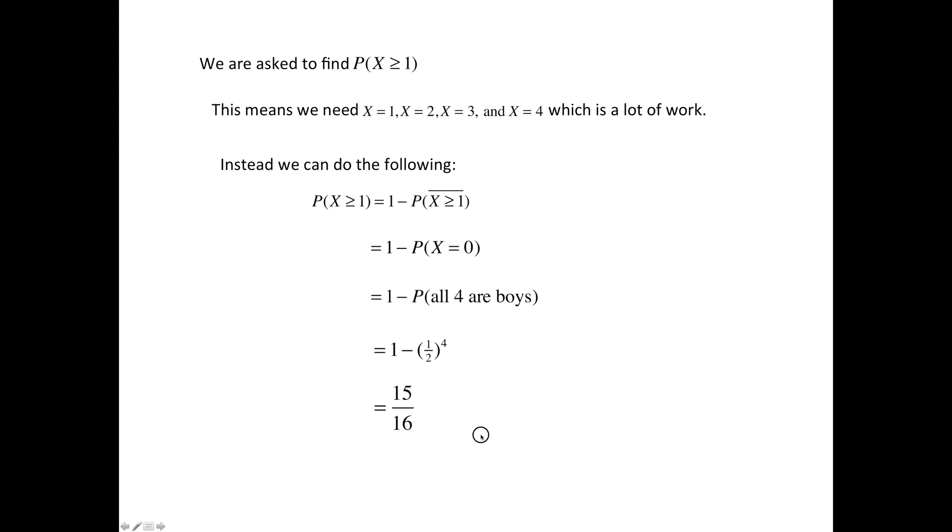But this method can be used for a lot of different things, not just gender combinations. For example, four percent of light bulbs are defective. There's a batch of 12 that are tested. What's the probability at least one is defective? So we're going to use the variable X again. Since the question is about defective, then we should let X be the defective ones.